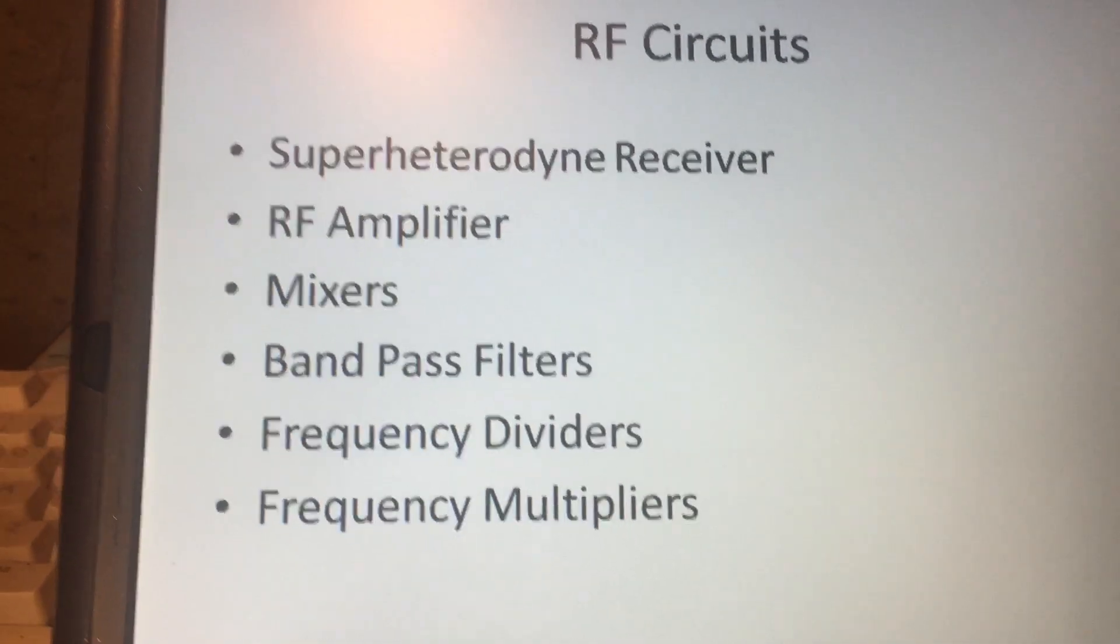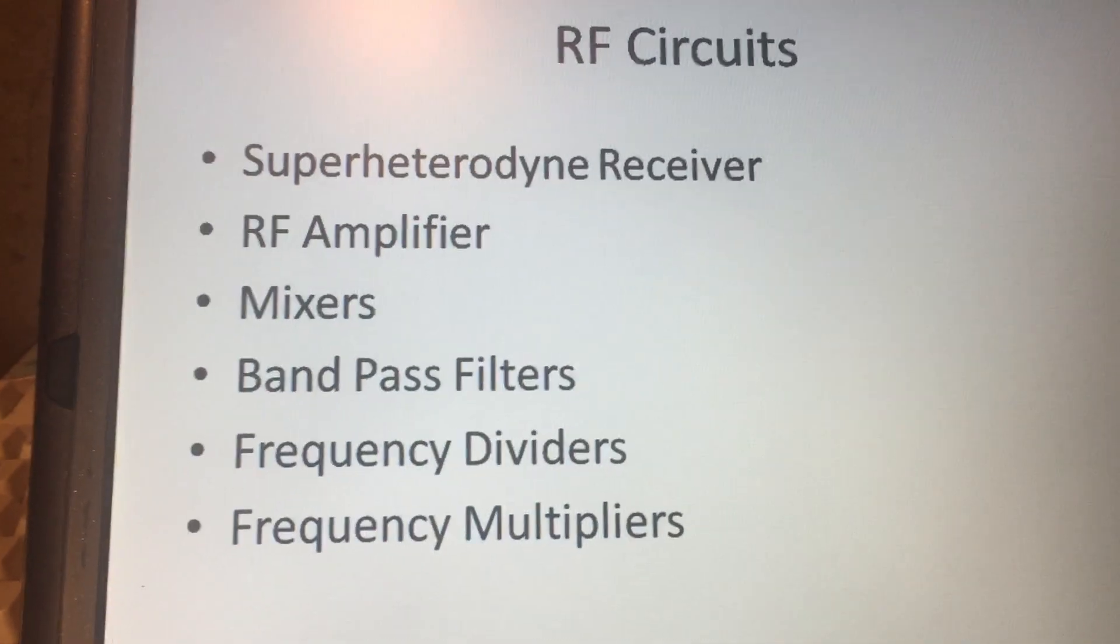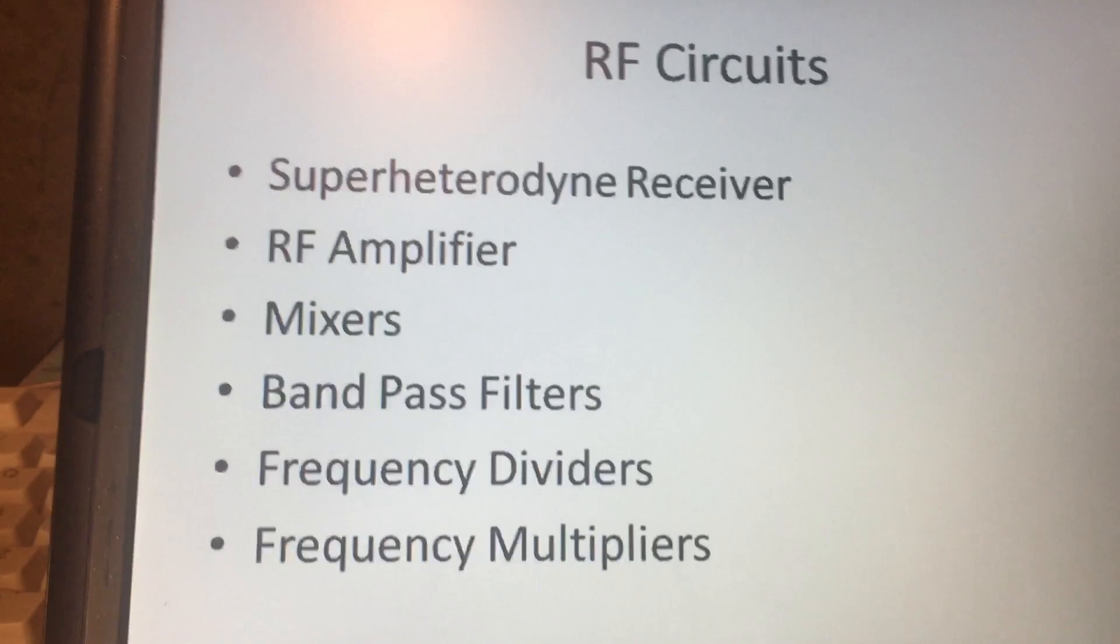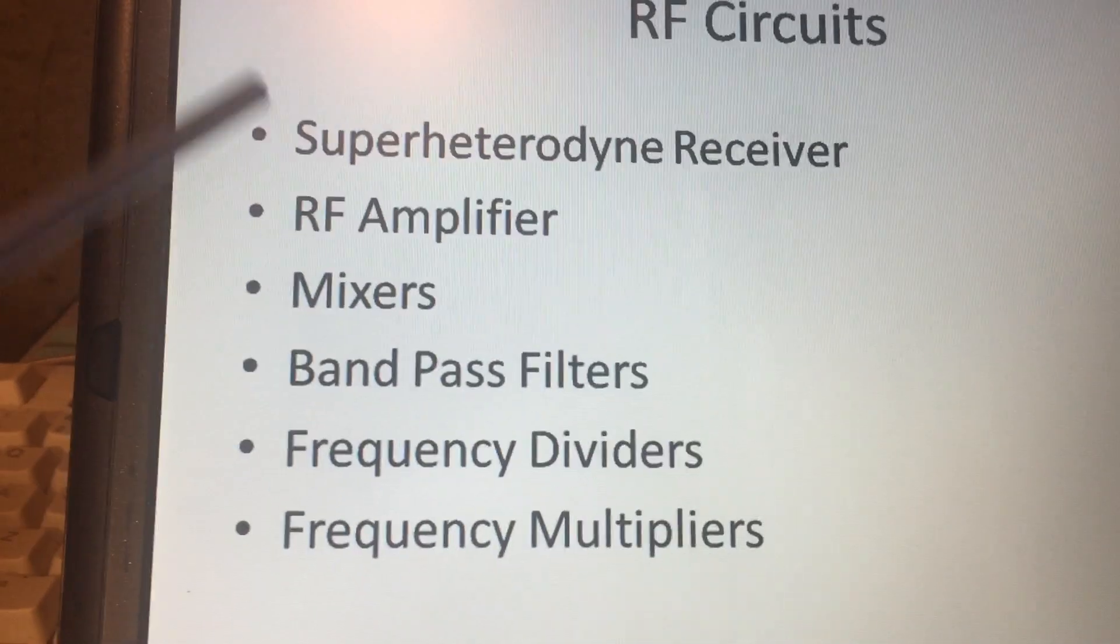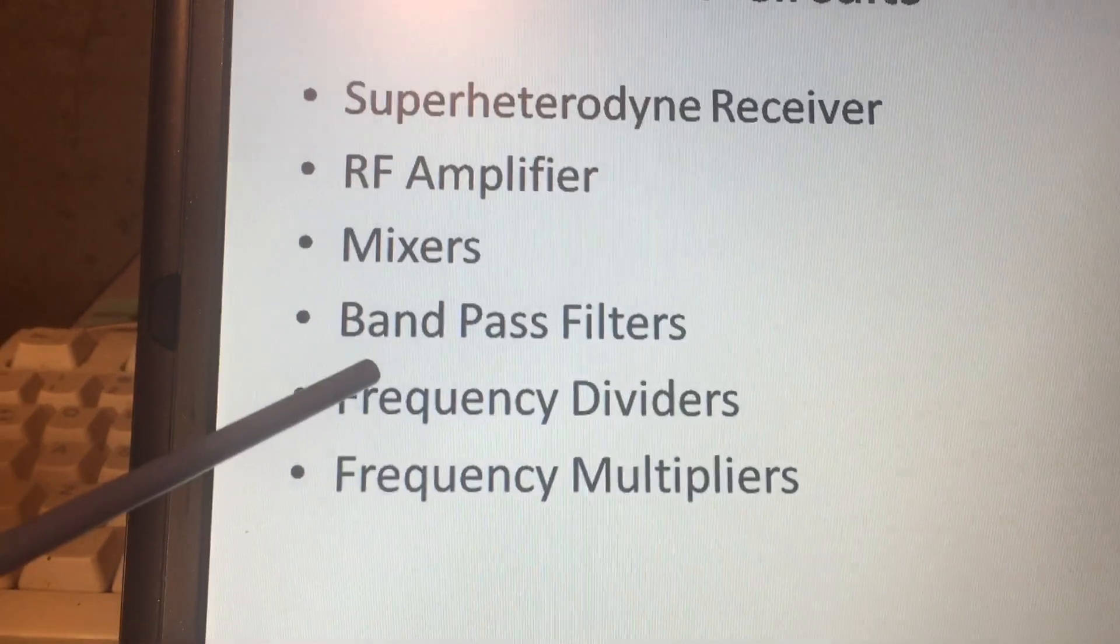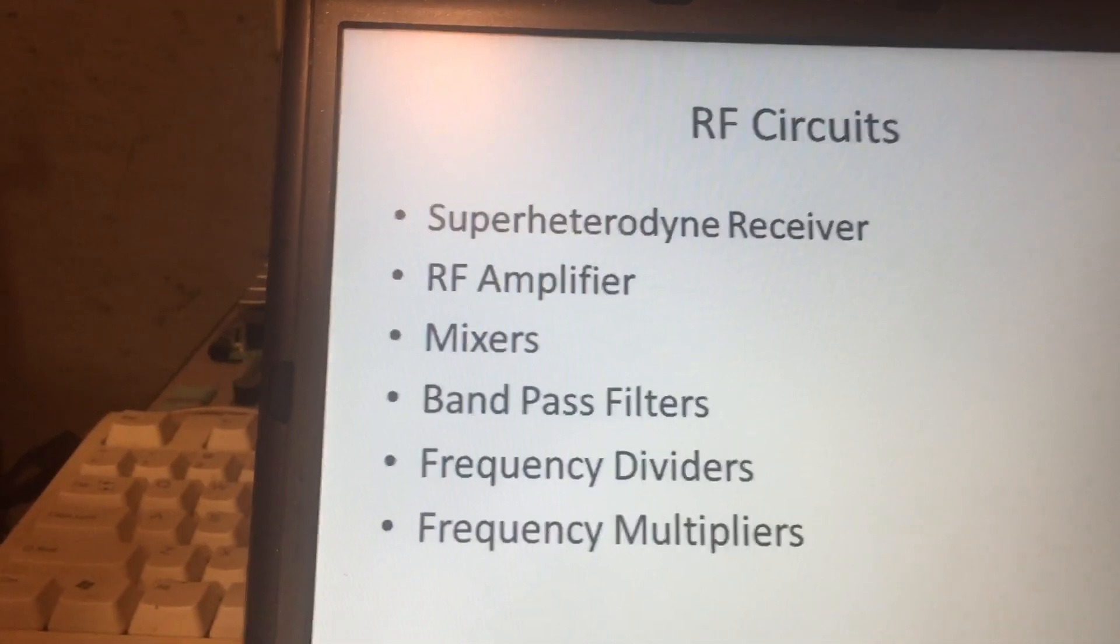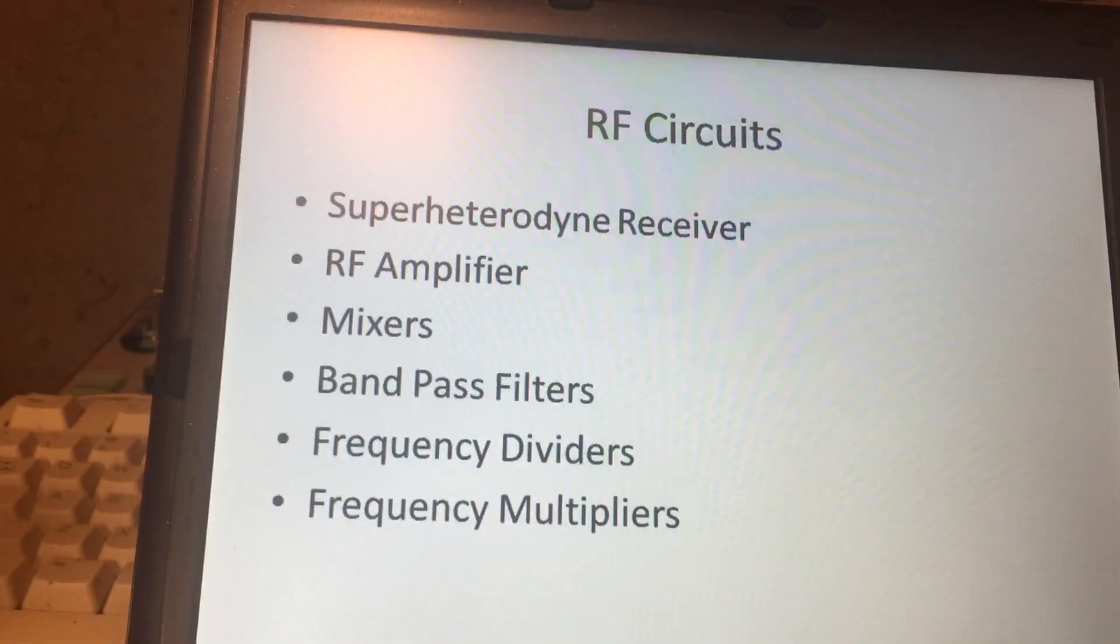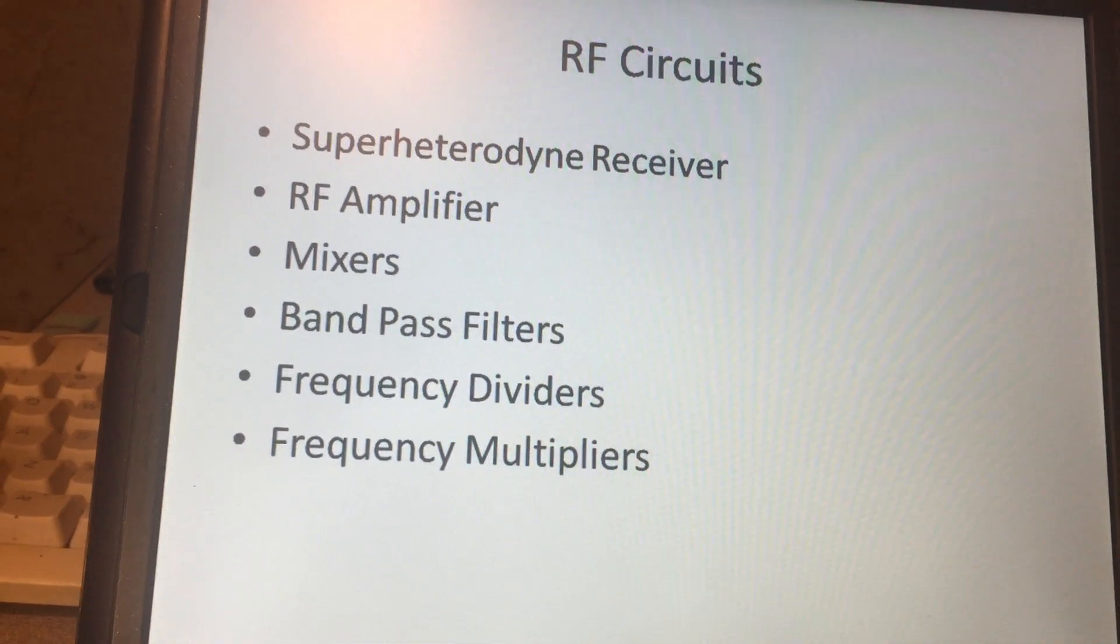Today I'd like to talk about the receiving side and the components that are used in the receiver. Most receivers today use a superheterodyne type topology. The main components are the RF amplifier, the mixer, and the bandpass filter. In some cases you might see frequency dividers and frequency multipliers as well.